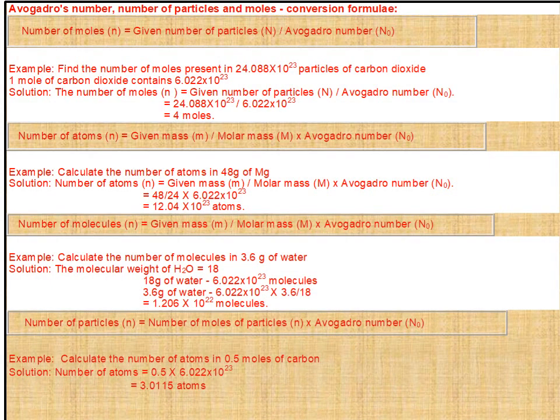Conversion formula: number of moles (n) = given number of particles (N) ÷ Avogadro's number (N₀). Example: find the number of moles in 24.088 × 10²³ particles of carbon dioxide. One mole of CO₂ contains 6.022 × 10²³ particles.